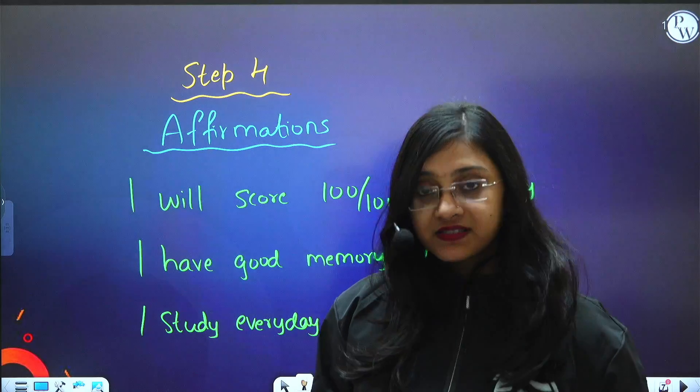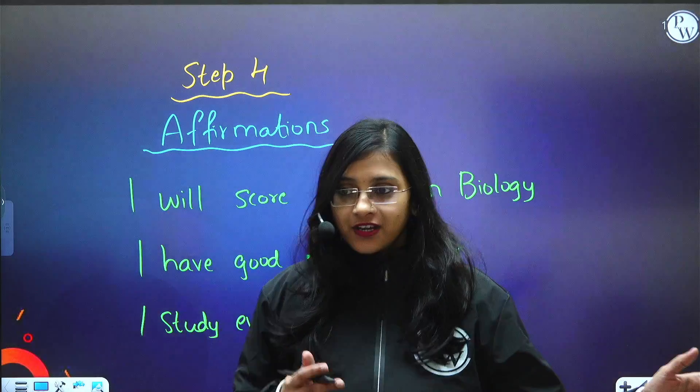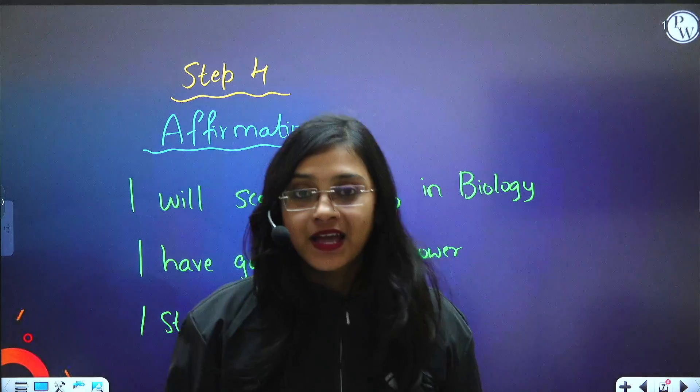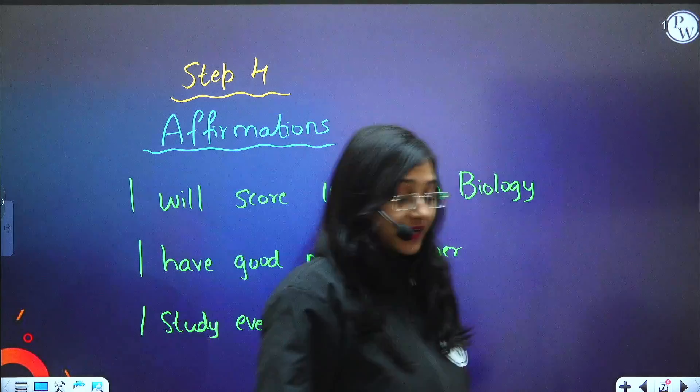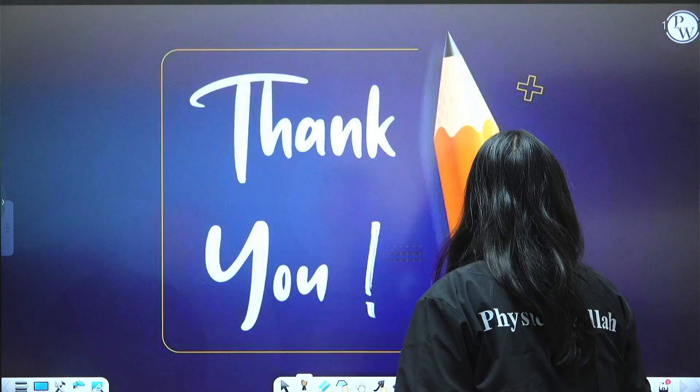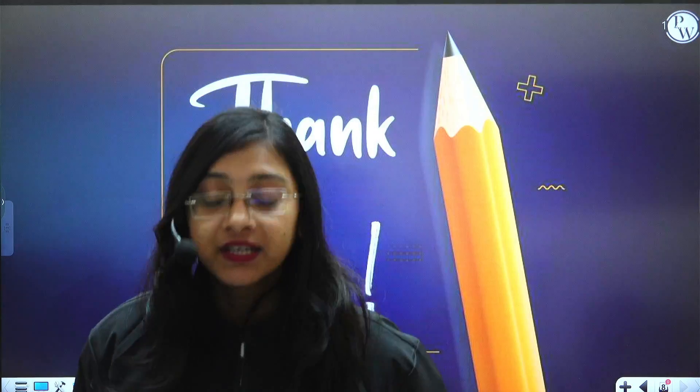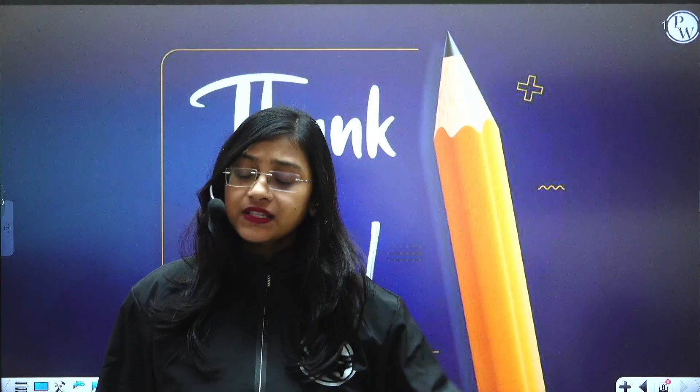Even though these are step one, step two, step three - all of these steps should be done simultaneously. Along with revision, you will have this affirmation with you, you will keep reading this. That is how you can score 95% and above in biology in these two months, in this 60 days. That's all for today my dear students. I hope you like the video. Let's meet in the next video. Until then, bye!